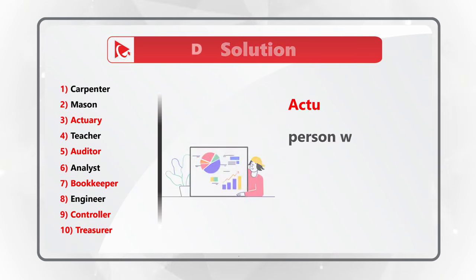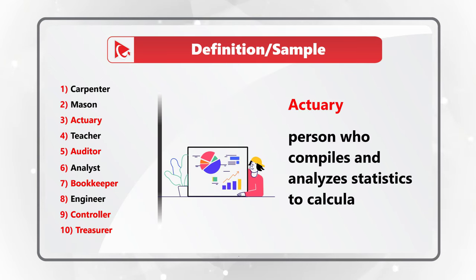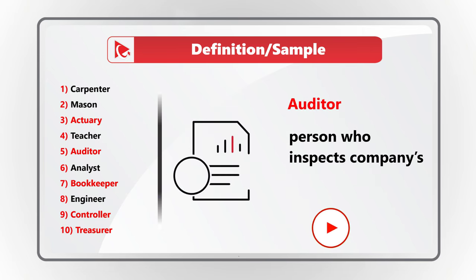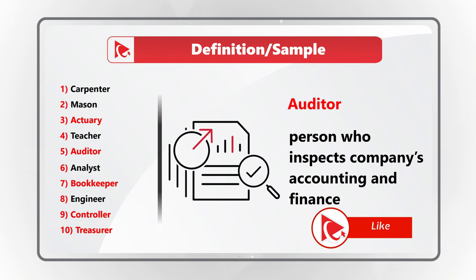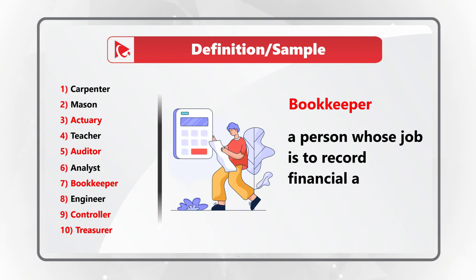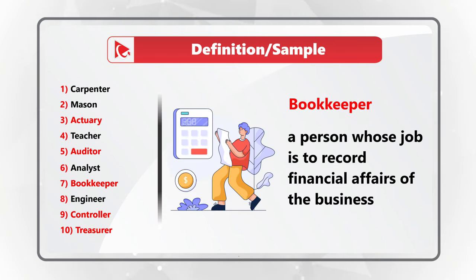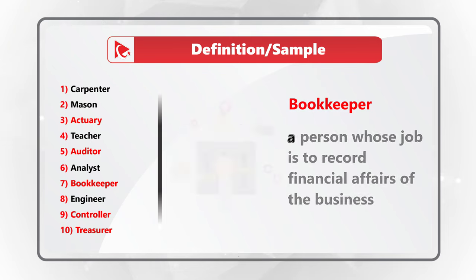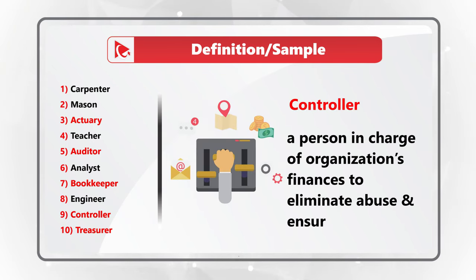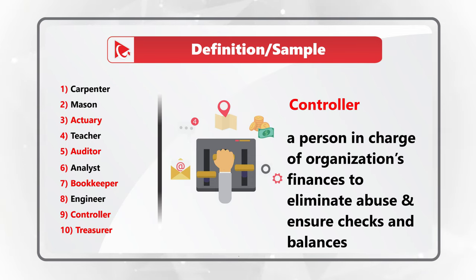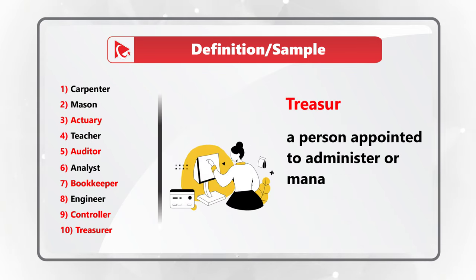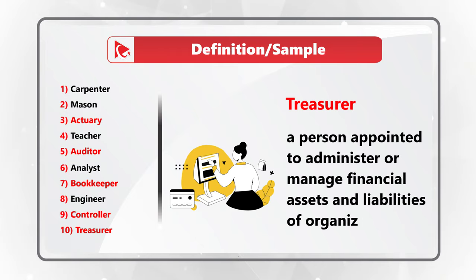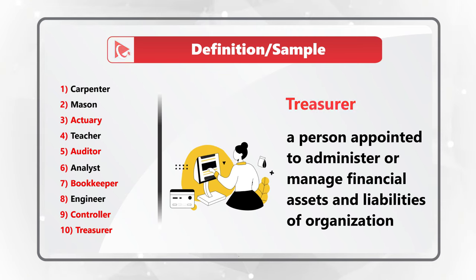For example, an actuary is a person who compiles and analyzes statistics to calculate risks for the organization. An auditor is the person who inspects a company's accounting and finance. A bookkeeper is a person whose job is to record the financial affairs of the business. A controller is the person in charge of the organization's finances to eliminate abuse and ensure systems of checks and balances.